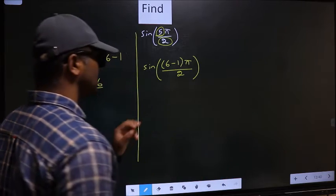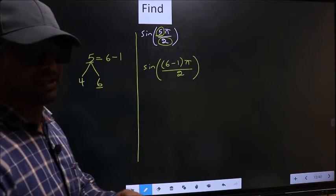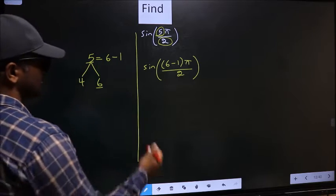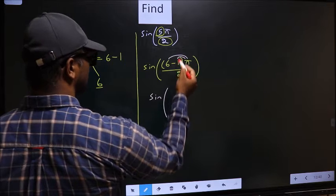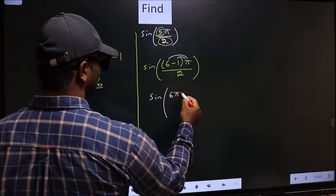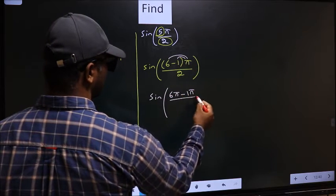This is your step 1. Next, sin. Now you should open up the brackets. You get 6π minus 1π by 2.